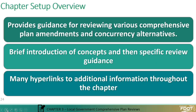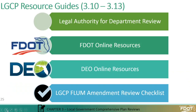Within each section of Chapter 3, you're going to find several hyperlinks that Gary was talking about. Those hyperlinks are there to help as an additional learning aid, in case you have additional specific questions regarding certain topics. At the end of Chapter 3, you're going to notice that there are several resource guides available to help you understand certain topics — for example, what is the legal authority to review future land use map amendments, or concurrent transportation items. Resource guides also talk about different online resources available through FDOT and DEO regarding plan amendment review.